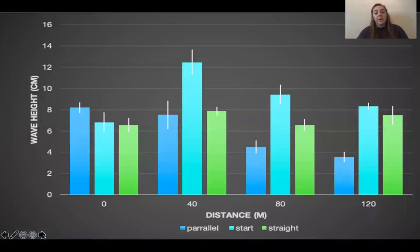Here is the data we collected for this experiment. We can see the parallel is in the dark blue, the starting treatment is in the turquoise, and the straight run through is in the green. We'll go distance by distance to break this down a little bit. At zero meters you can see that just about every treatment was the same, it had the same wave height.